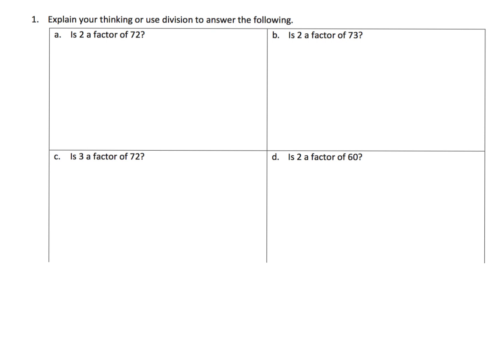You can also just use straight-up division to figure out if something is a factor. For example, is 2 a factor of 72? Well, you can just do division. You could say 2 goes into 72.